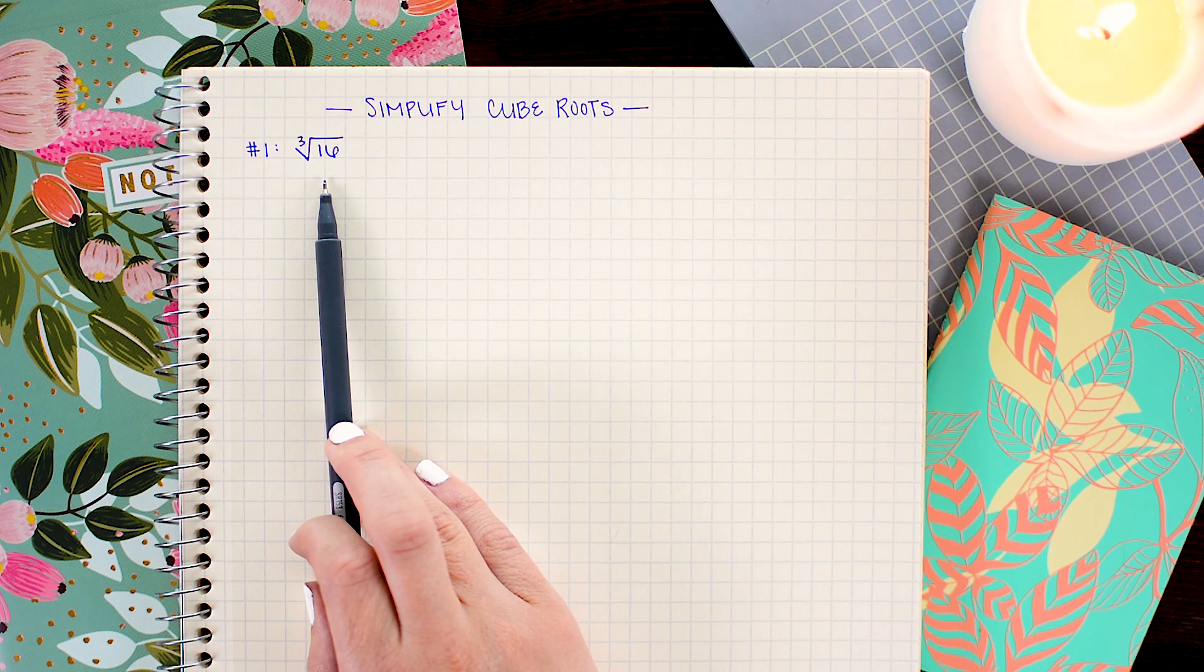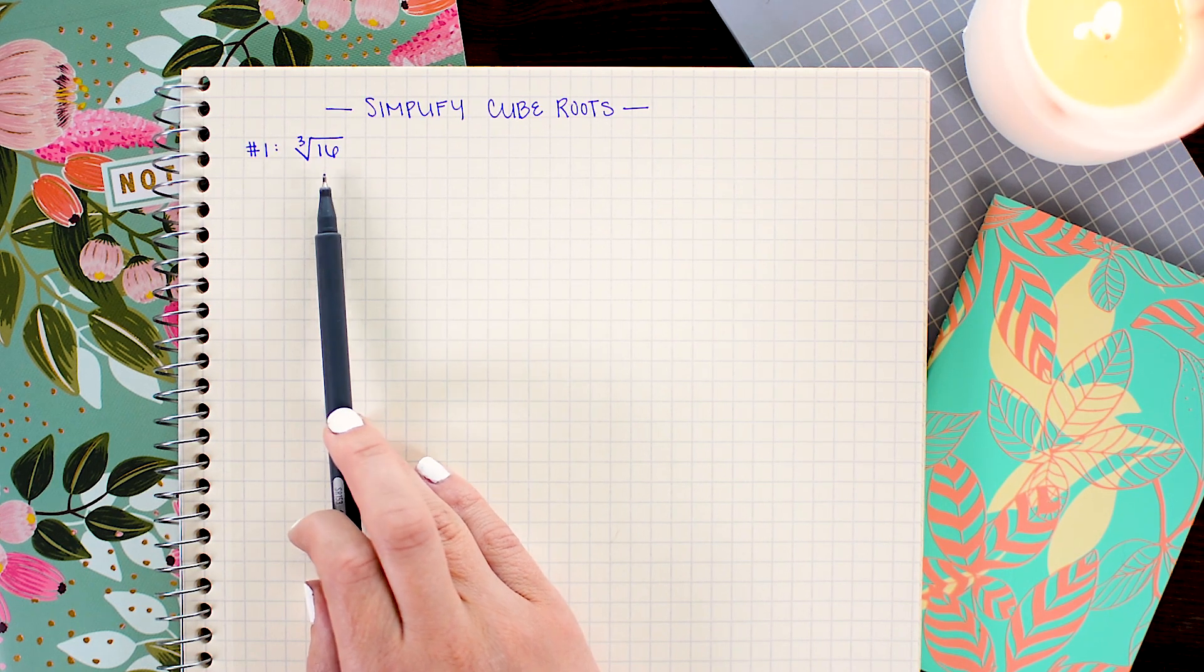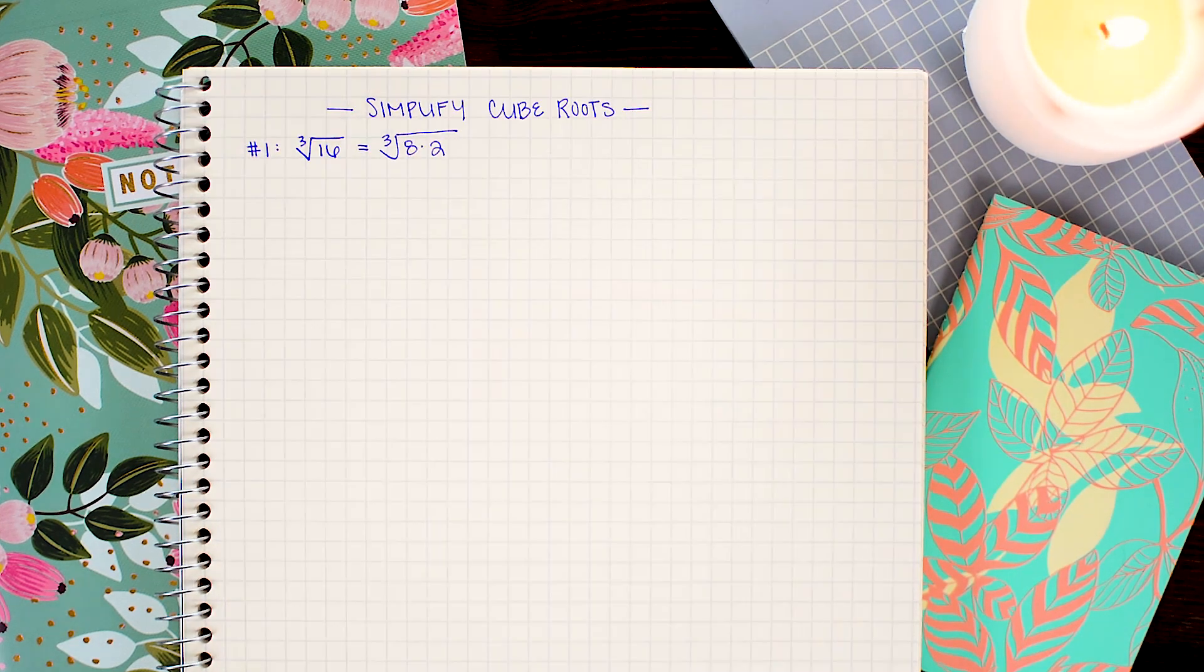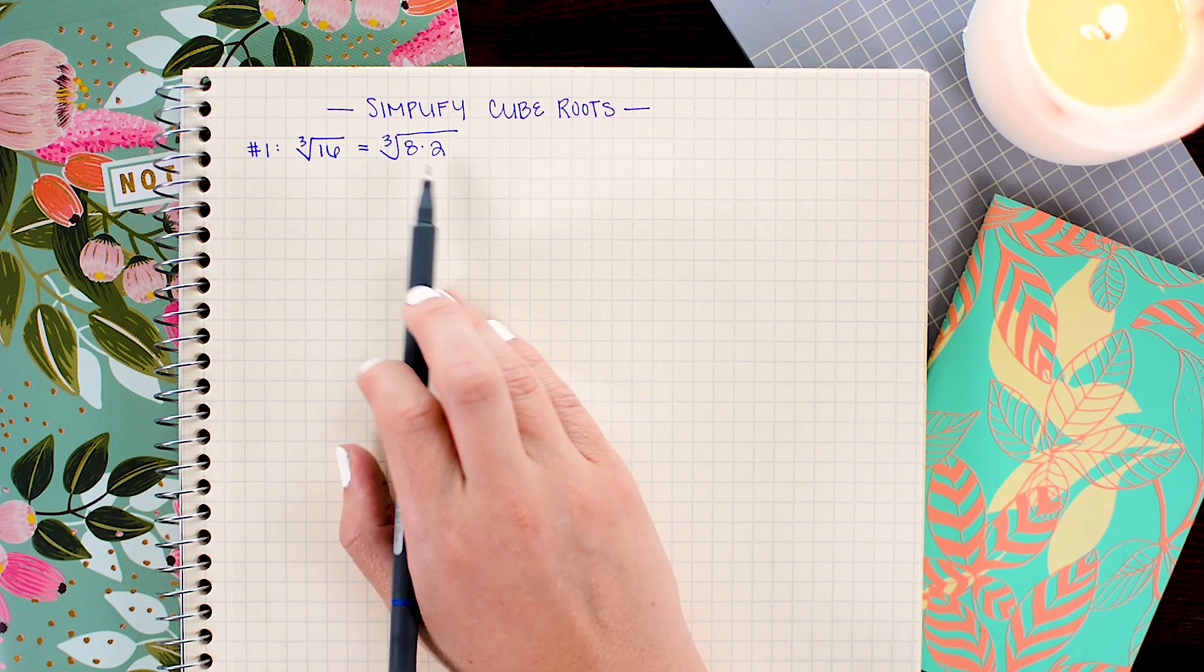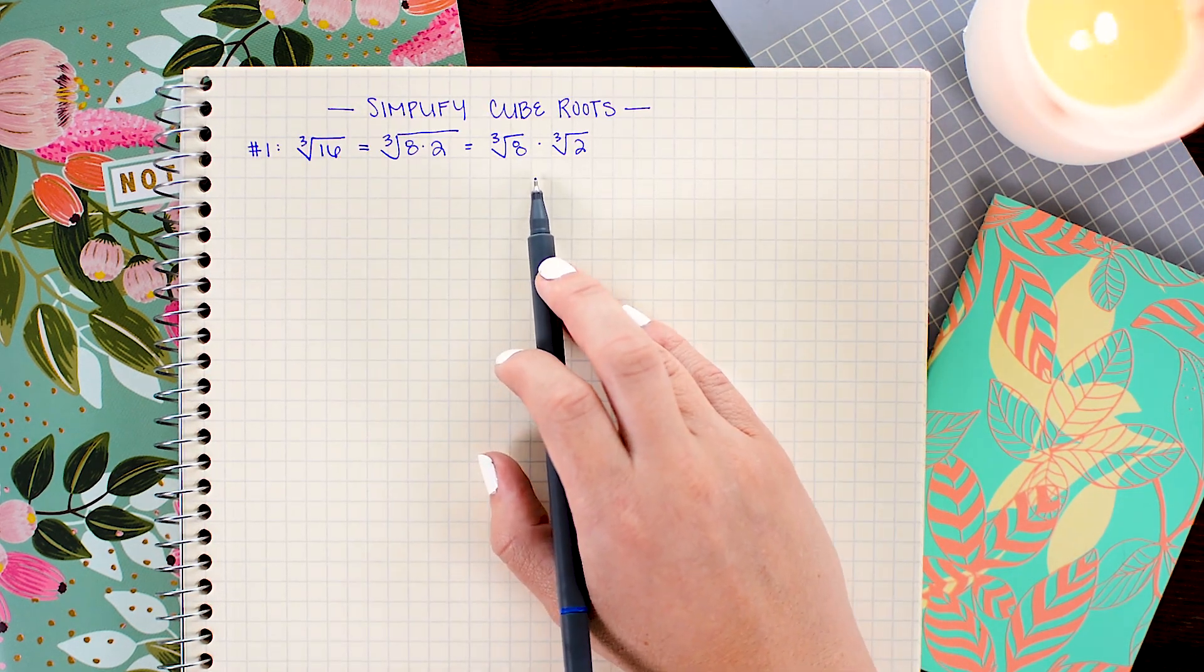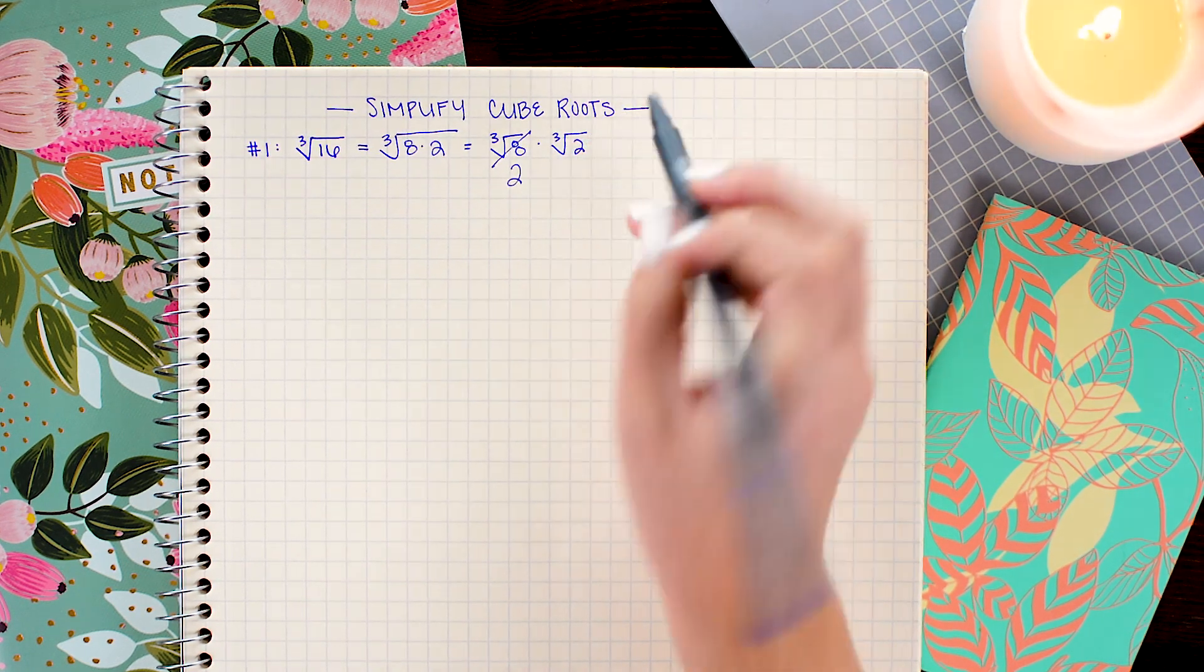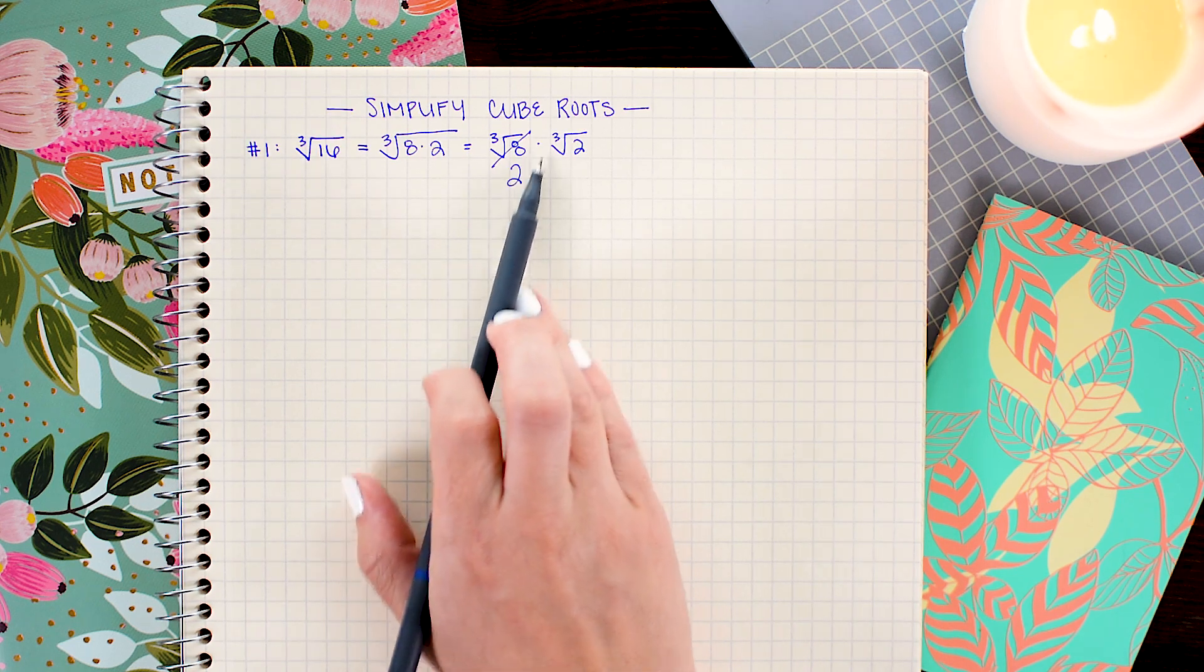For this first problem, we're trying to take the cube root of 16. Now I know that 8 is a factor of 16, so I'm going to start by splitting 16 up into 8 times 2. Just like in square roots, we can separate this cube root into multiple cube roots, one for each factor. Doing that is a really handy step because it helps us see that when we take the cube root of 8, which is 2, it breaks free of the radical. So my answer becomes 2 cube root 2.